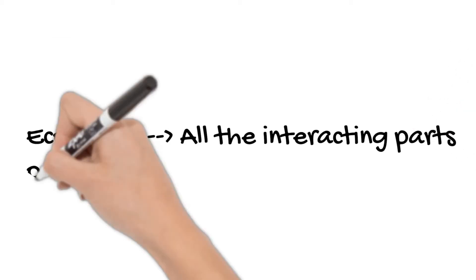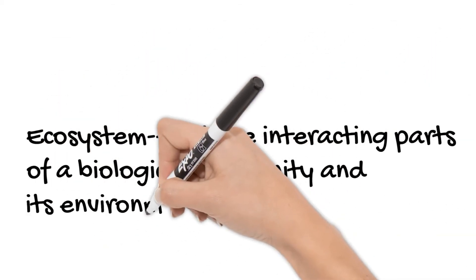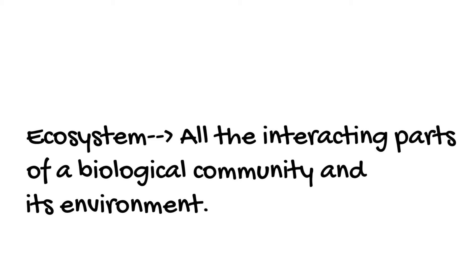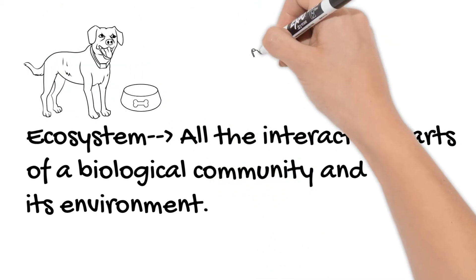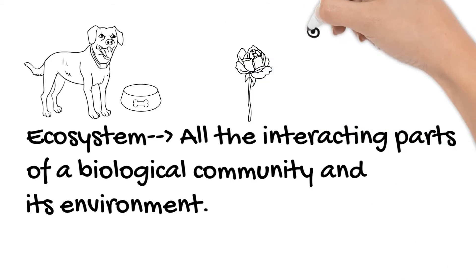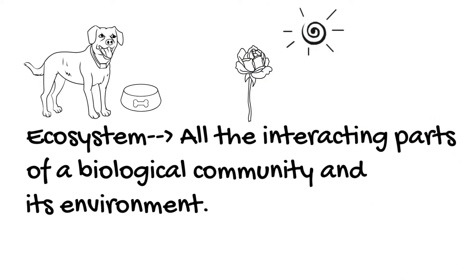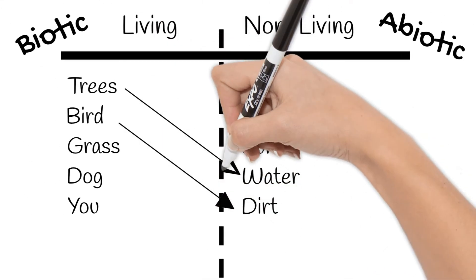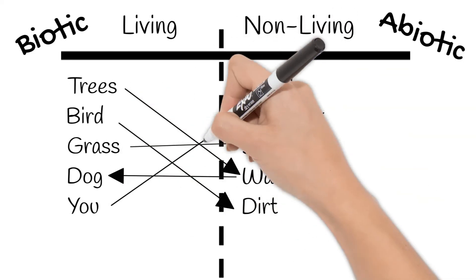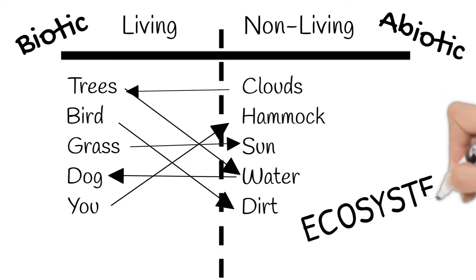An ecosystem is all the interacting parts of a biological community and its environment — so all the biotic and abiotic things, and how they affect each other. These interactions you've already seen: your dog, who is biotic, drinking water, that's abiotic; or the rosebush, biotic, growing in the sunlight, abiotic. Take a look at your list of biotic and abiotic things you saw outside. Think about what interactions are happening between the two columns. That is the ecosystem outside your window.